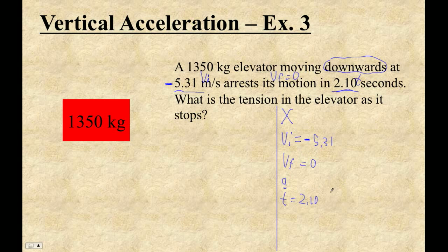And I feel this equation coming on. We don't care about the X. We just care about A. So we're going to do V_f is V_i plus A times T. So let's put that in there. The final velocity is zero, and that equals our initial, which is moving down, minus 5.31 plus A times 2.10.